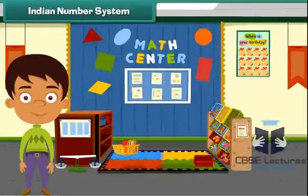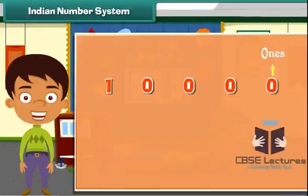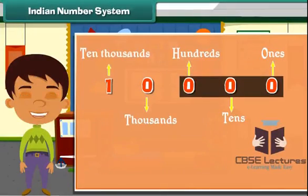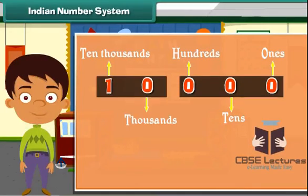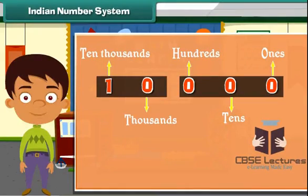The Indian number system groups the last three digits of a number together and then groups the rest into sets of two digits each.